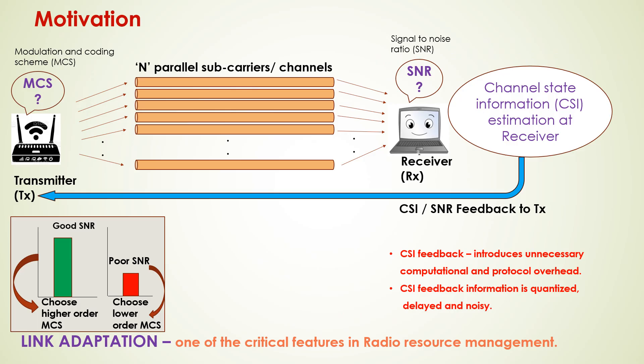The selection of optimal modulation and coding scheme in wireless transmission depends upon the dynamically evolving channel state. Link adaptation in a wireless channel thus depends on the CSI, that is channel state information, which is estimated at the receiver and is fed back to the transmitter using a CQI report field. These reports can be expensive when generated more frequently, as it introduces unnecessary computational and protocol overhead. Also, the CSI feedback information is quantized, delayed, and noisy.